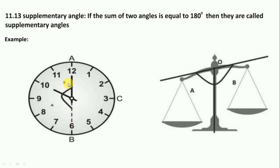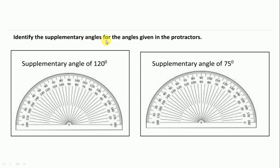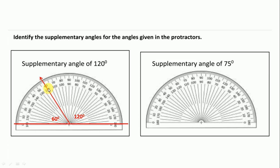Identify the supplementary angles for the angles given in the protractor. Supplementary means 180 degrees, so first we draw a line from 0 to 180 degrees. Then we draw 120 degrees. Here 120 is marked and above that is 60 degrees — so the supplementary angle of 120 degrees is 60 degrees.